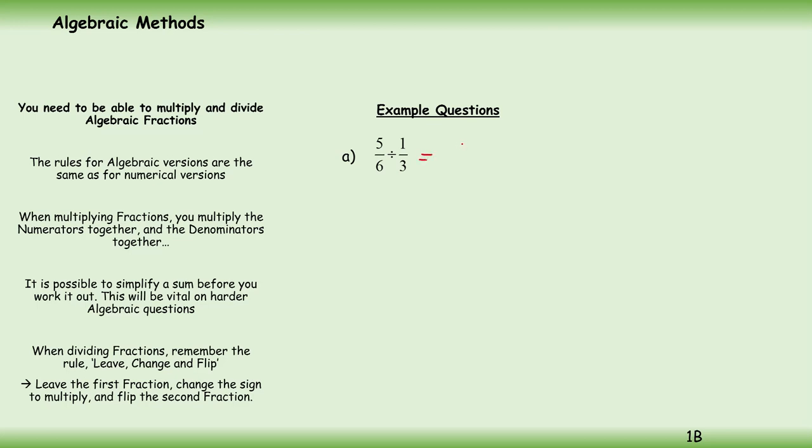I can do that by multiplying by the reciprocal of a third. So 5 over 6 times reciprocal of a third—I flip it over, so it's 3 over 1. Now 3 goes into itself one time and 3 goes into 6 two times, leaves me with 5 times 1 divided by 2. So we make it a multiplication—makes it much easier—and then we multiply by the reciprocal of the fraction.